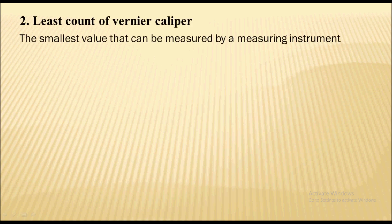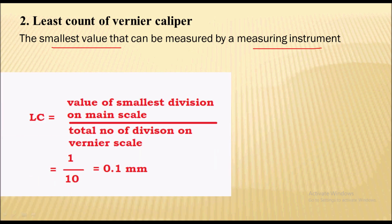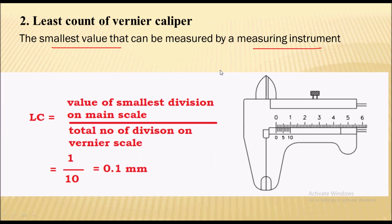So we will calculate the least count of vernier caliper. Before that, what is the least count? The least count of any instrument is the smallest value that can be measured by the measuring instrument.